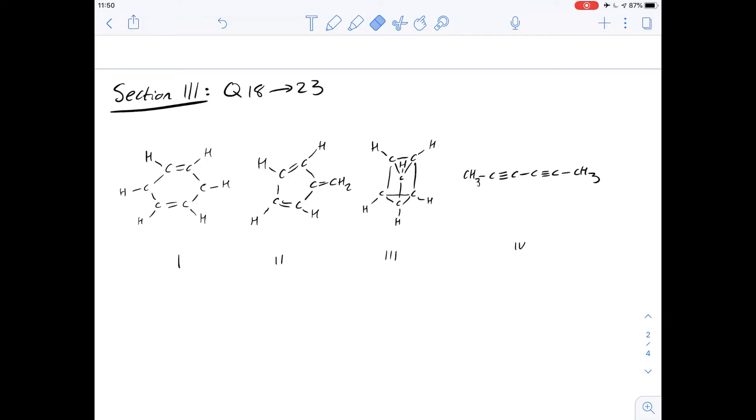Hi, I'm Carl and in this video we're going to have a look at questions 18 to 23 in section 3 of the purple booklet. This is a question about benzene and the different structures and isomers you can have.